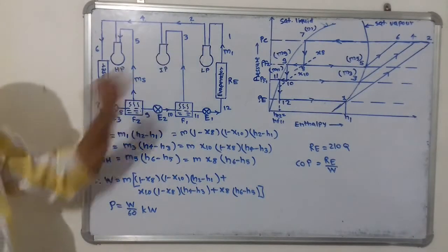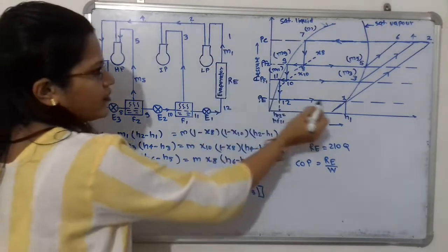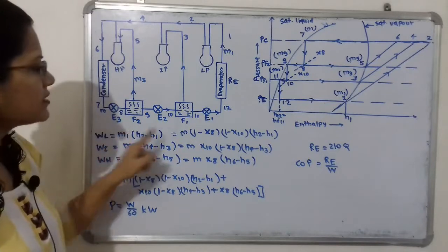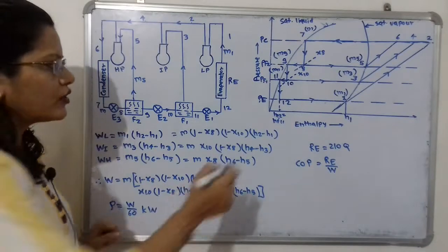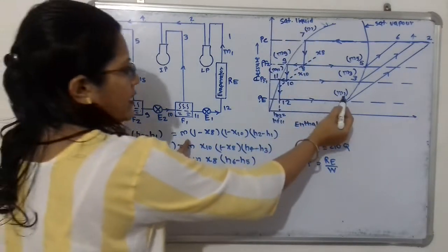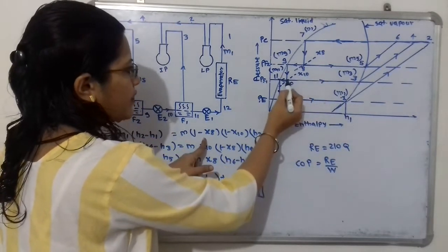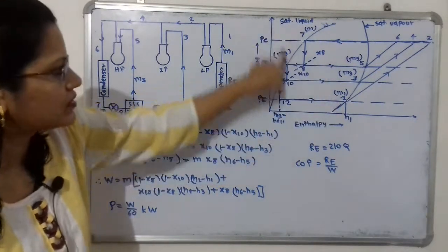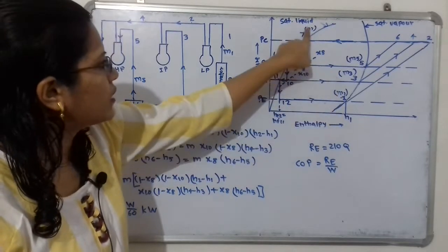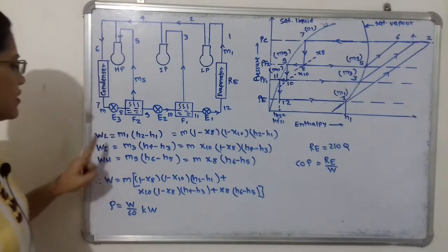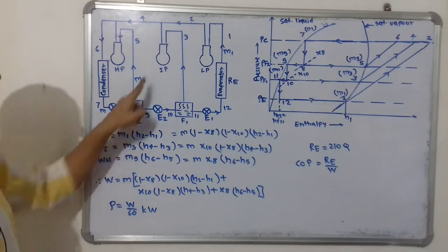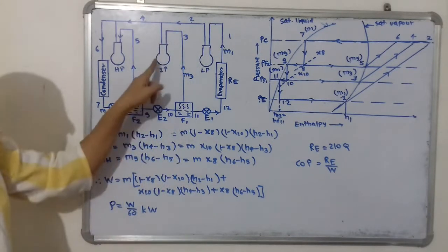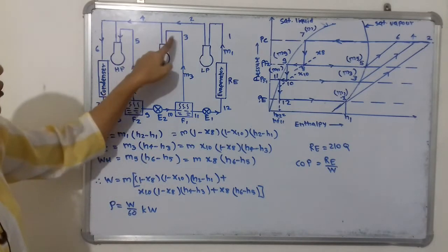The work done at the low pressure compressor is WL = M1 × (H2 − H1), where M1 = M × (1 − x8) × (1 − x10). The work done at the intermediate pressure compressor is WI = M3 × (H4 − H3), where M3 = M × (1 − x8) × x10.